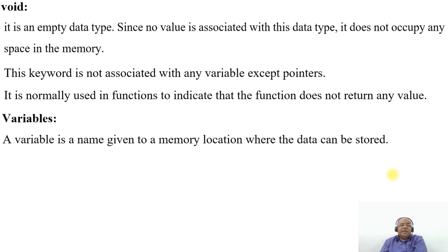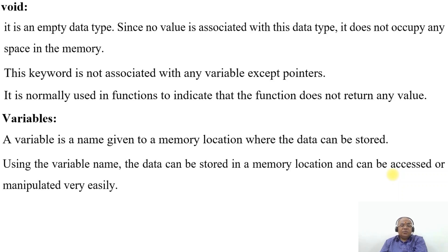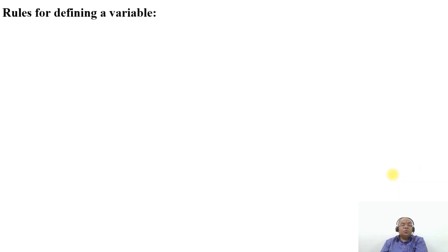Variables: a variable is a name given to a memory location where data can be stored. Using the variable name, the data can be stored in a memory location and can be accessed or manipulated very easily.